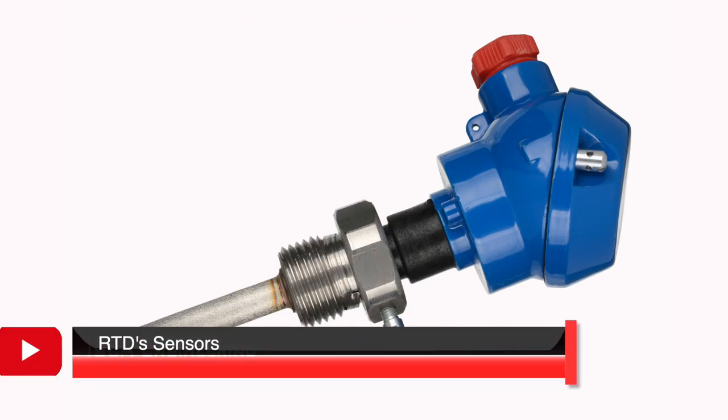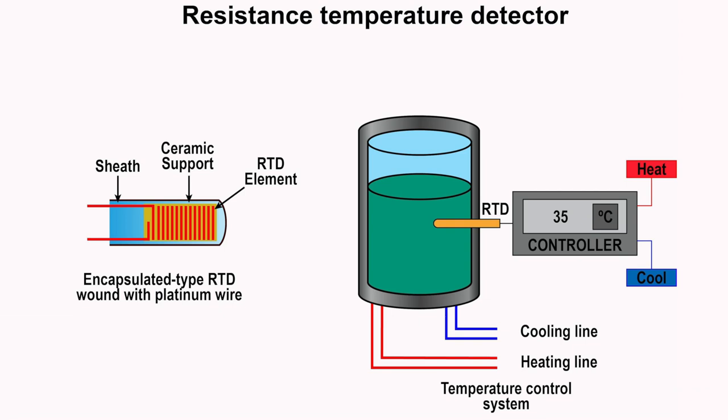Resistance temperature detectors measure temperature using the principle that the resistance of a metal changes with temperature. That means that the electrical resistance is directly proportional to temperature. The hotter they become, the higher the value of their electrical resistance.